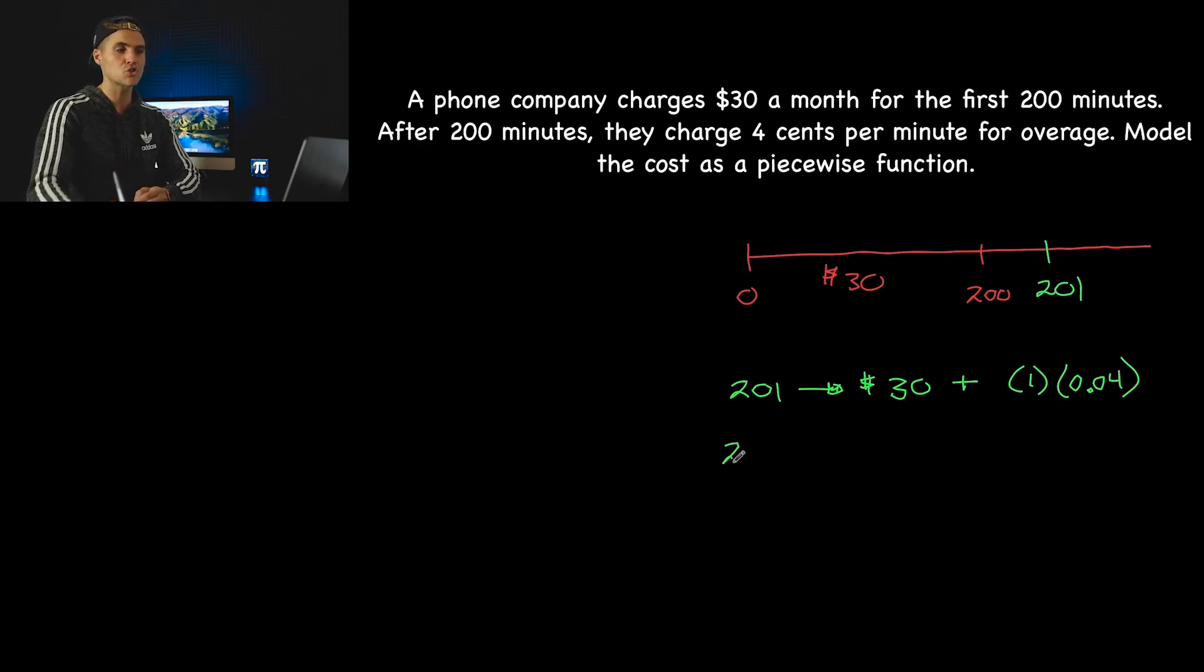What if you talk 202 minutes? Well, you're still going to get charged $30, but now you're going to get charged overage for two minutes. There's going to be two minutes of overage over the 200 at $0.04 per minute. So you're going to get charged an overage fee of $0.08.